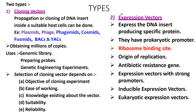In case of expression vectors, the expression of DNA insert producing a specific protein will be seen. The key difference is that in a cloning vector, DNA will be amplified, whereas in an expression vector, the inserted DNA will produce a specific protein.